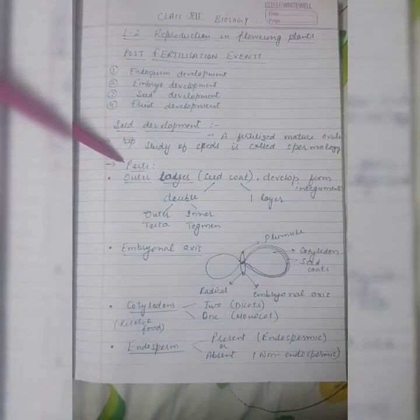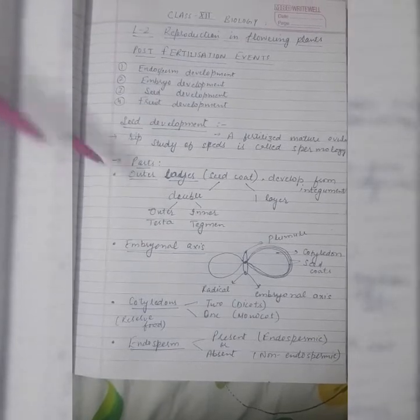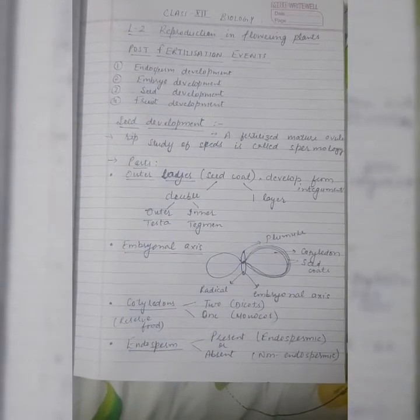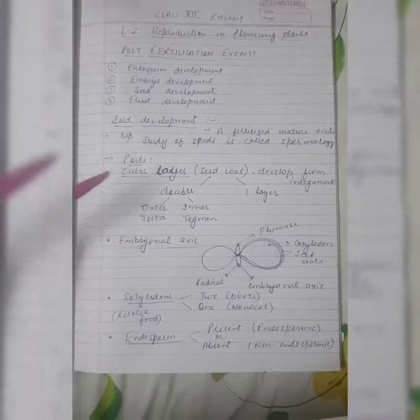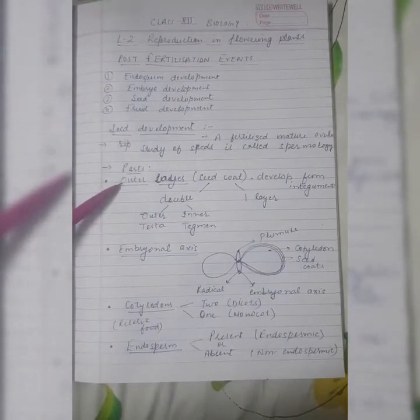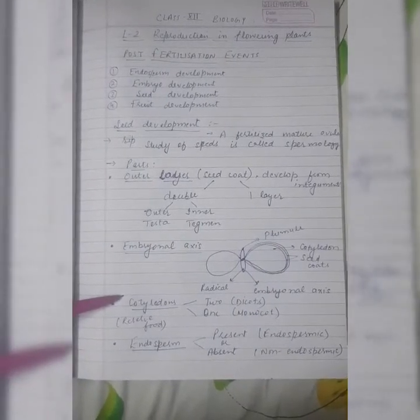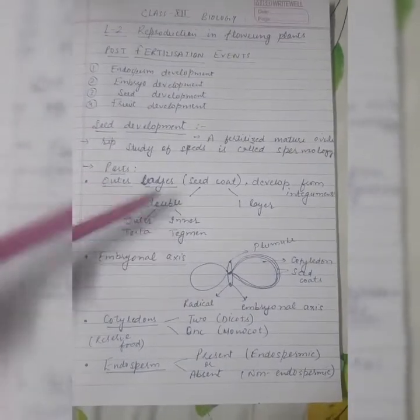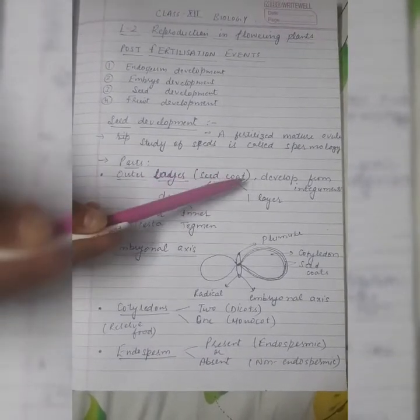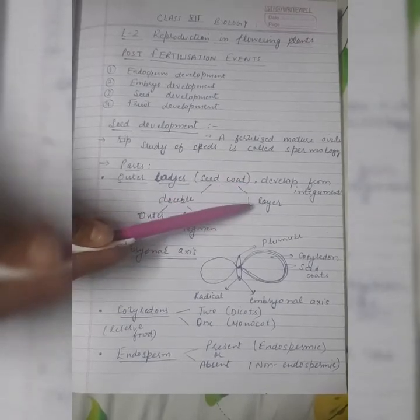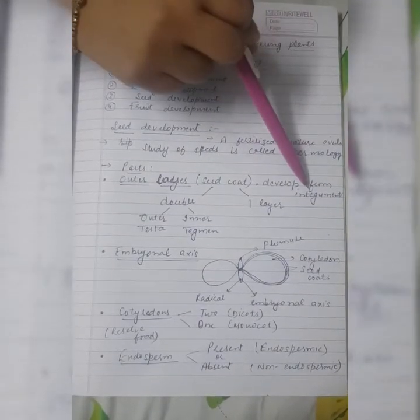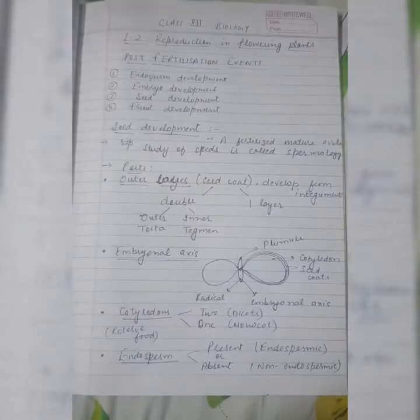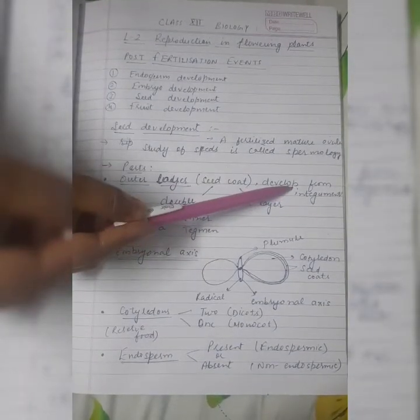Let's see the parts of a seed. There are three basic parts: outer layer, embryonal axis, and cotyledons. The outer layer of the seed is called the seed coat. It can be either two layers or a single layer, and it has been developed from the integuments of the ovule.